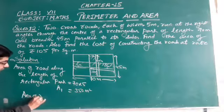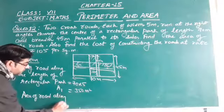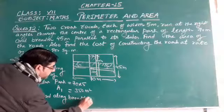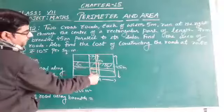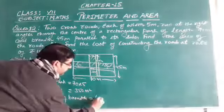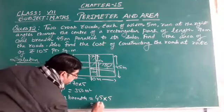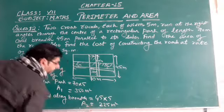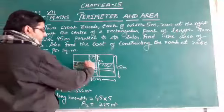And the area of the road along the breadth of the rectangular park, the length is 45, so 45 into 5, which is 45 multiplied by 5, we get 225 square meters. We consider this as A2.